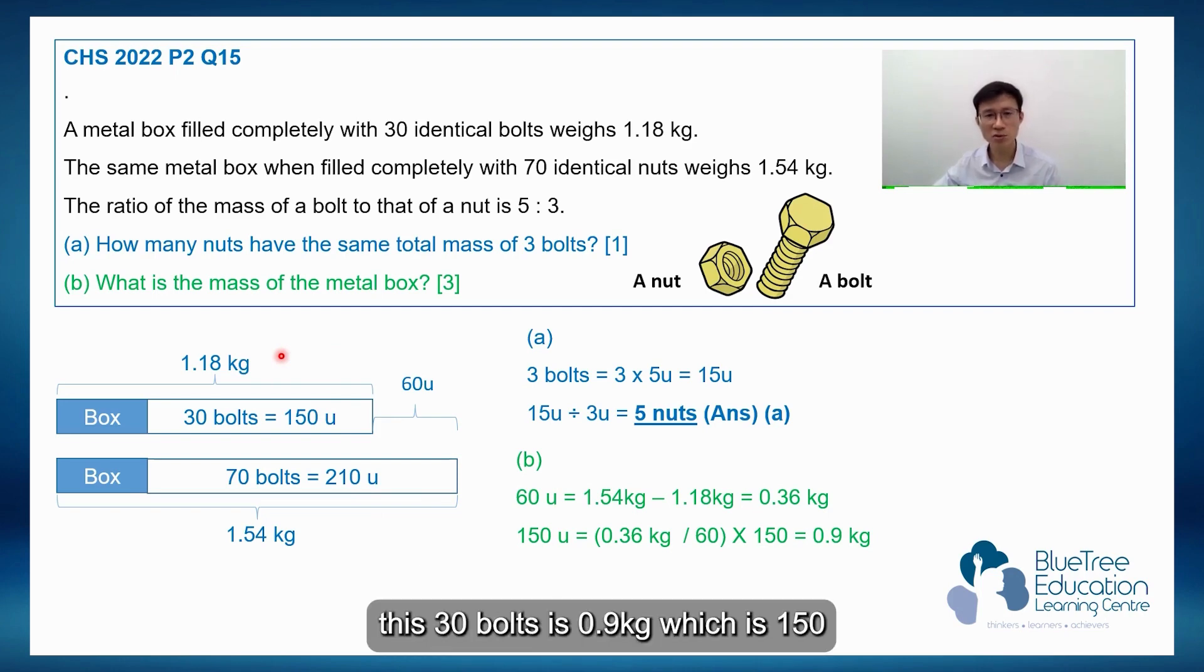If I know this 30 bolts is 0.9 kg because it's 150 units, it's 0.9 kg. And the total mass is 1.18. Can't I find the box? I can, right?